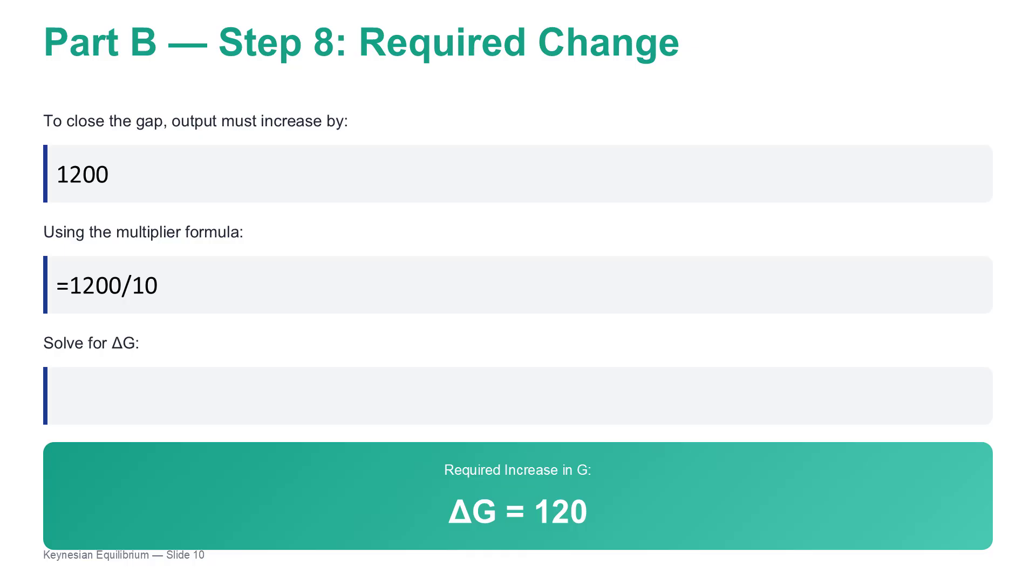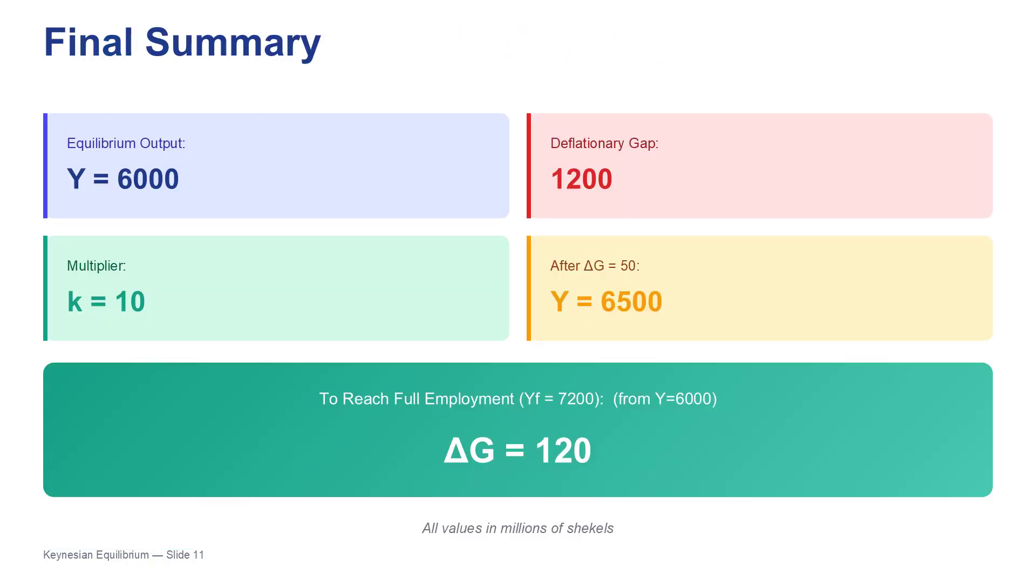What really stands out to me is how consumer behavior, that 0.9 MPC, is what dictates the entire policy. It's not just a number the government picks out of thin air. Not at all. It's a direct calculation. But it's also important to remember the assumption we made to get that clean result. Which was? The government just found that 120 million shekels. We assumed they increased spending without raising taxes. Taxes stayed at 160 the whole time. So they were deficit spending. Yep. Borrowing the money.